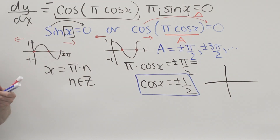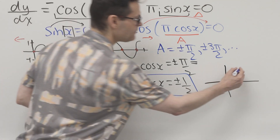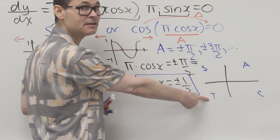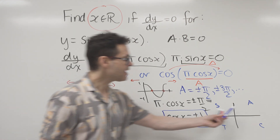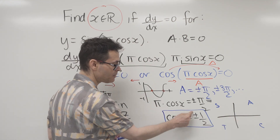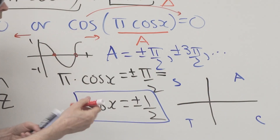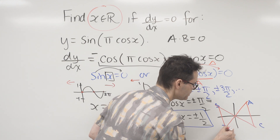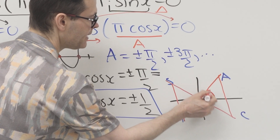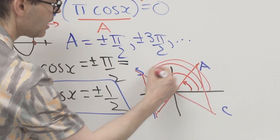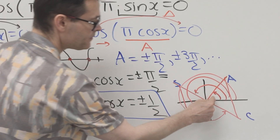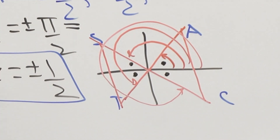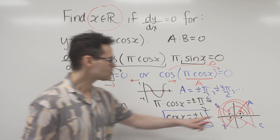Let me take you back to high school trig. Recall 'All Students Take Calculus' — sine is positive in quadrant two, tan in quadrant three, cosine in quadrant four, and all are positive in quadrant one. Since we want cosine both positive and negative, all four quadrants are involved. Drawing a criss-cross gives terminal arms in each quadrant — all sharing the same reference angle.